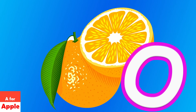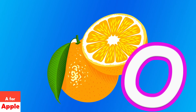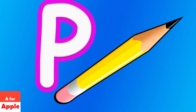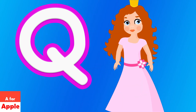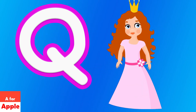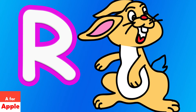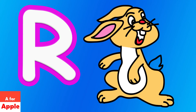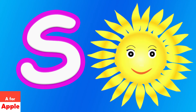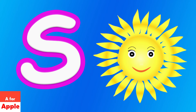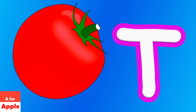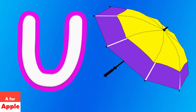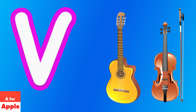O for orange, P for pencil, Q for queen, R for rabbit, S for sun, T for tomato, U for umbrella, V for violin.